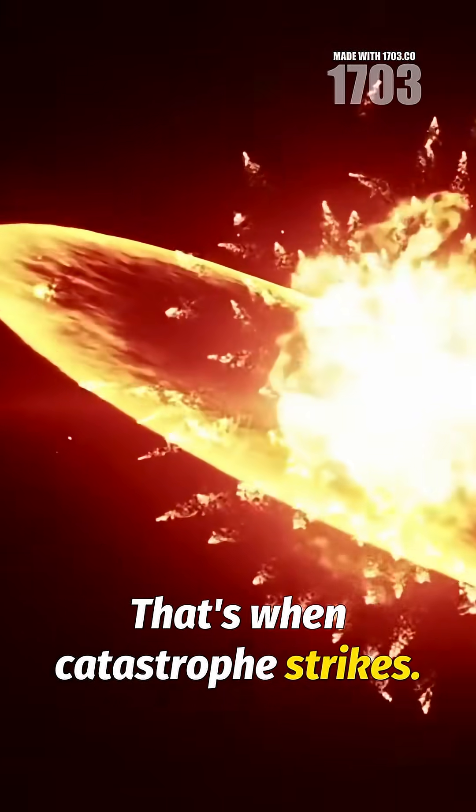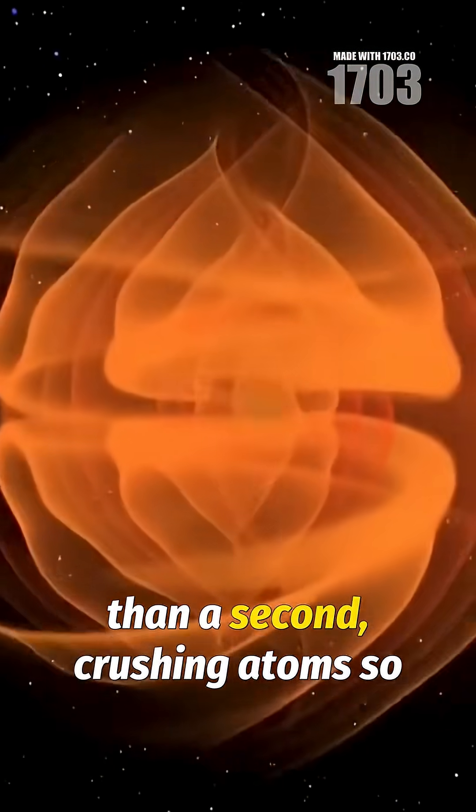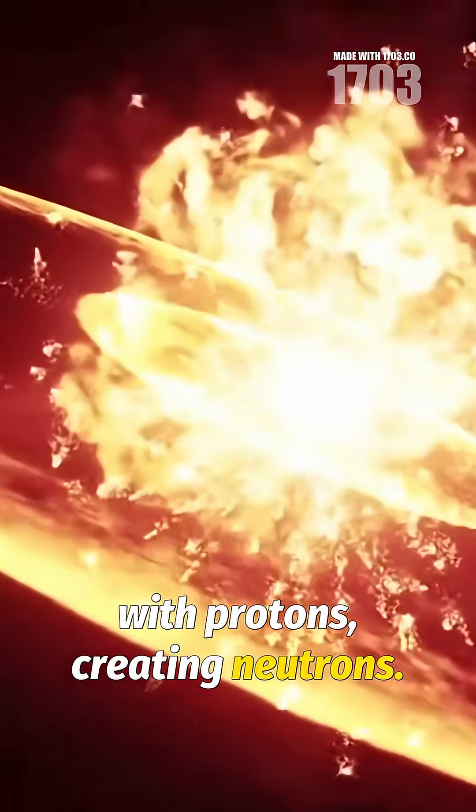That's when catastrophe strikes. The iron core collapses in less than a second, crushing atoms so tightly that electrons merge with protons, creating neutrons.